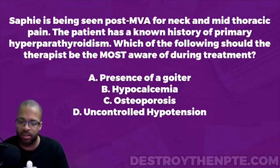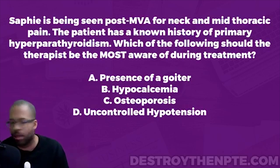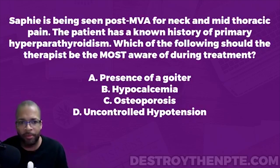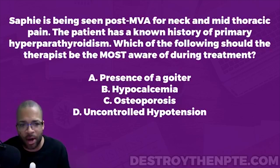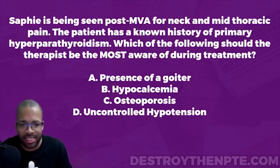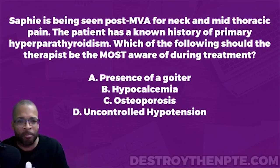What are y'all putting down - is it C, is it B, is it A? Lock in your answer, you got about five seconds before we knock this one down. We're going to go over this other systems question. Safi is being seen post-MVA for neck and mid-thoracic pain. The patient has a known history of primary hyperparathyroidism. Which of the following should the therapist be most aware of during treatment?